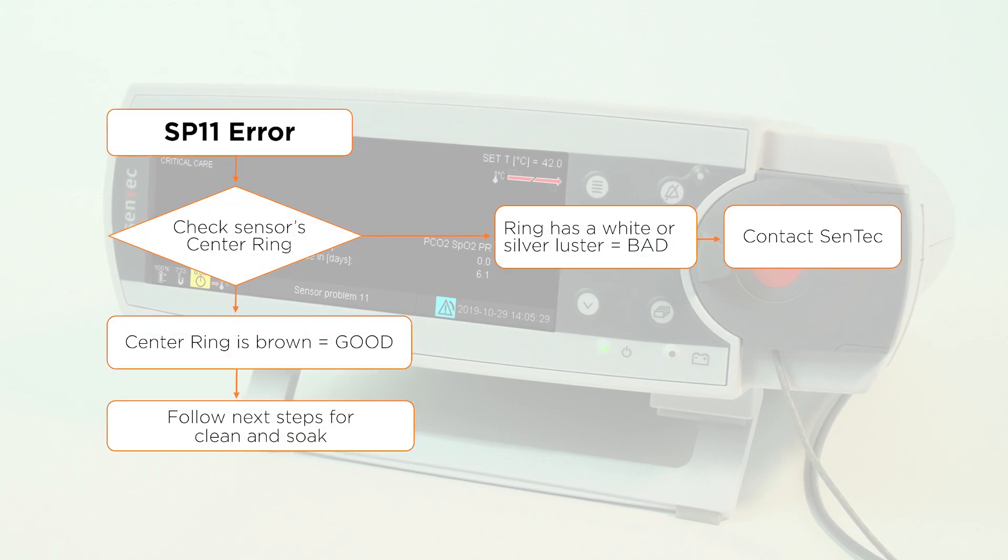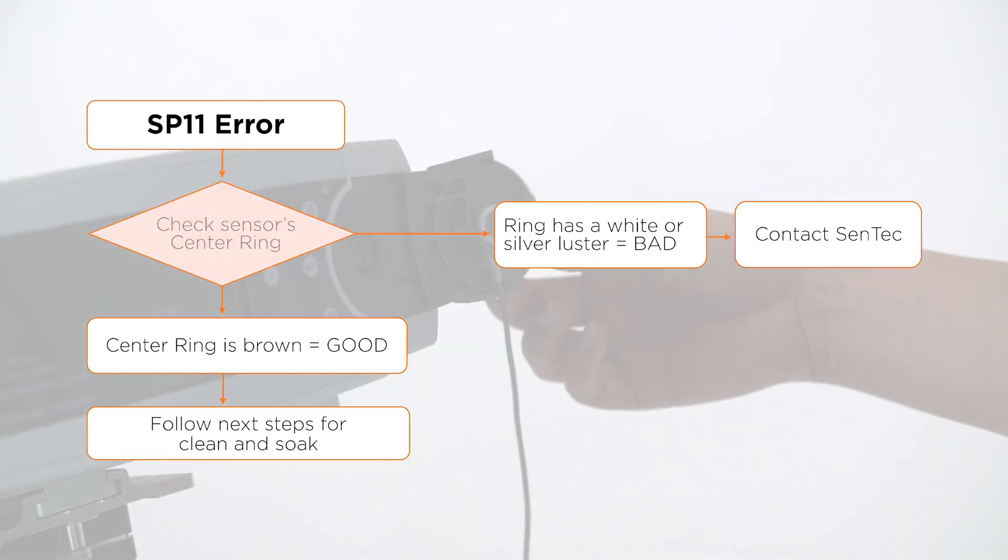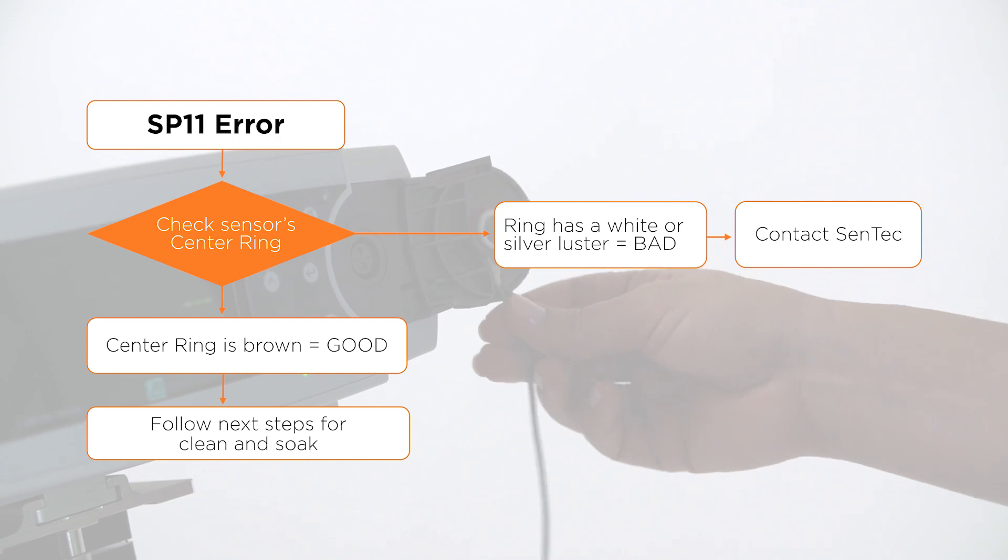Use this flowchart to troubleshoot the SP11 error. First, check the center ring on the sensor.